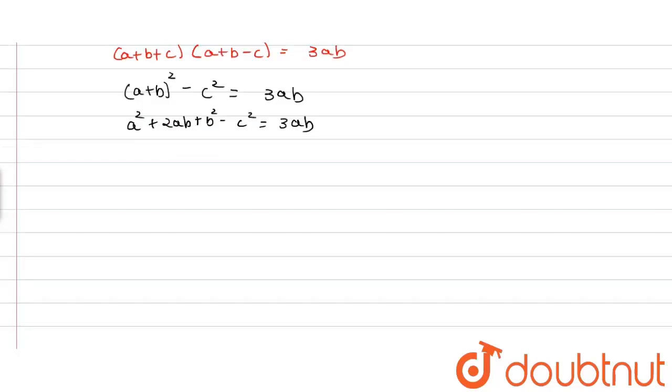Again solving this we get A squared plus B squared minus C squared is equal to AB. We know that cos C is equal to A squared plus B squared minus C squared upon 2AB. By putting value of A squared plus B squared minus C squared we get cos C is equal to AB upon 2AB.